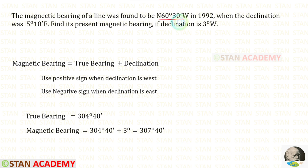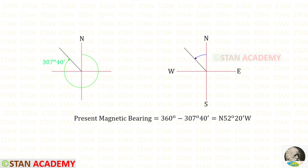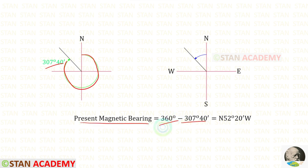In the question, the bearing is given in reduced bearing, so we have to convert this answer into reduced bearing. We have to subtract this whole circle bearing by 360. When we do that we will get the present magnetic bearing in reduced bearing: north 52 degree 20 minutes west.